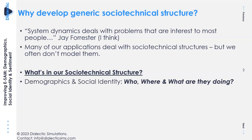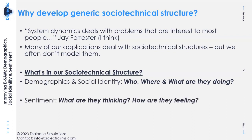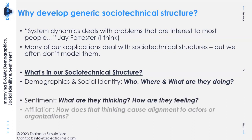The three things we're presenting are: demographics and social identity — who, where, and what are they doing? Sentiment — what are they thinking and how are they feeling? And affiliation — how does that thinking cause alignment to actors and organizations?